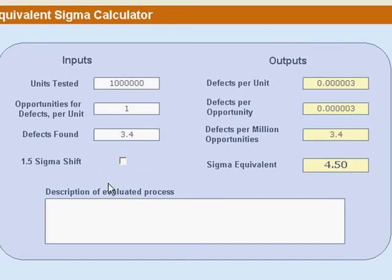I have preloaded that just to show you that if we test a million units with one opportunity for a defect per unit and we find 3.4 defects, we get, oddly, 3.4 defects per million opportunities, a sigma equivalent of 4.5 sigmas.